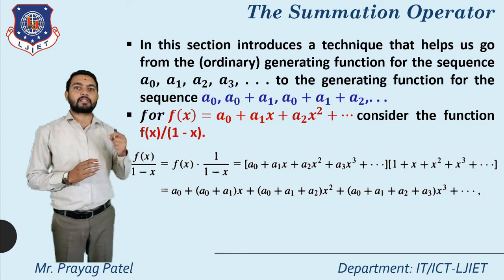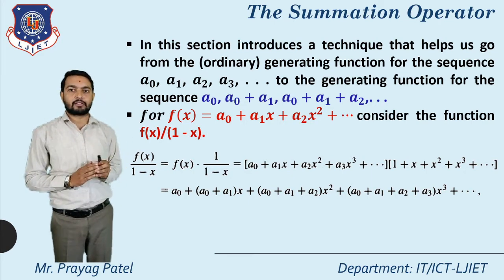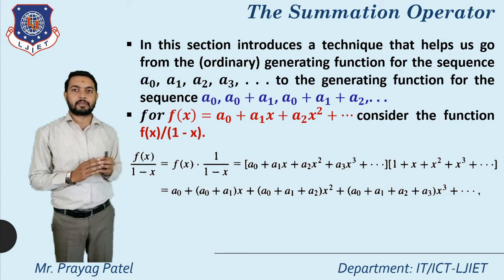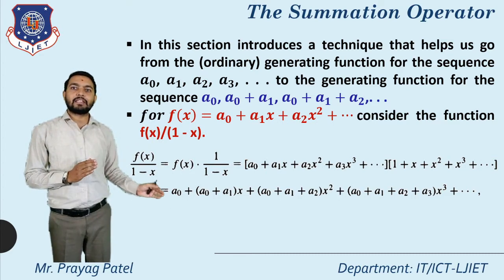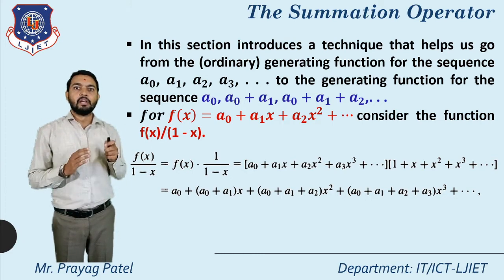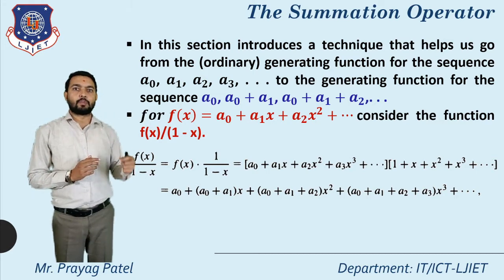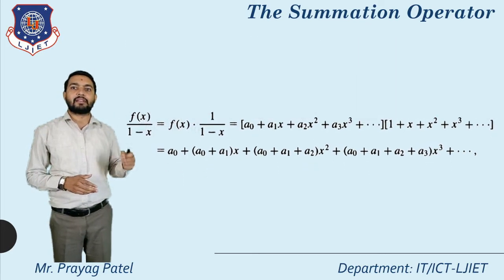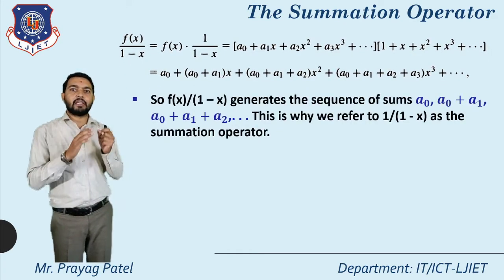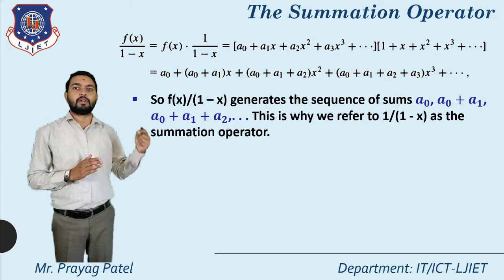The first part is a0 + a1·x + a2·x² + a3·x³ and so on. The second part, 1/(1-x), equals 1 + x + x² + x³ and so on. When we multiply these two terms we get: a0 + a1·x + (a0+a1+a2)·x² + (a0+a1+a2+a3)·x³ and so on. So f(x)/(1-x) generates the sequence a0, a0+a1, a0+a1+a2, and so on.